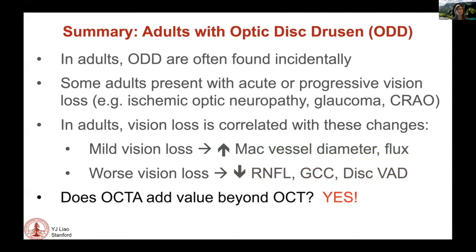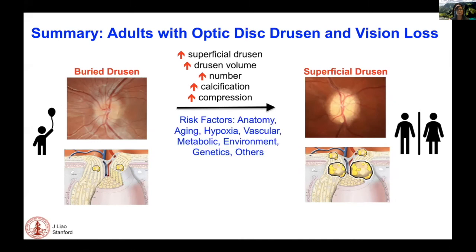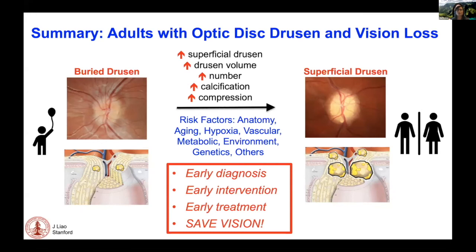Does OCTA add value beyond OCT? We believe so. In adults with optic disc drusen, as they age, there is an increase in superficial drusen, drusen volume, number of drusen, and calcification — overall leading to compartment syndrome of surrounding structures. Mild vision loss is associated with an increase in macular vessel diameter, suggesting vasodilation possibly related to auto-regulatory mechanisms, and increased flux. Progressive vision loss leads to irreversible thinning of retinal nerve fiber layer, ganglion cell complex, and disc vessel area density. The key for adults with vision loss and optic disc drusen is early diagnosis, enabling early intervention with potential beneficial treatment to save patients' vision.